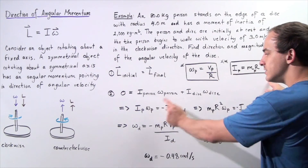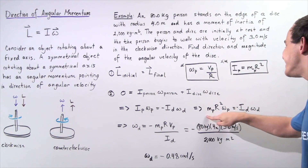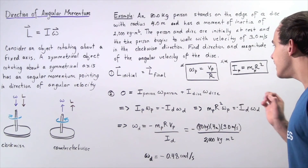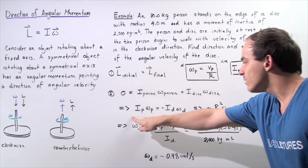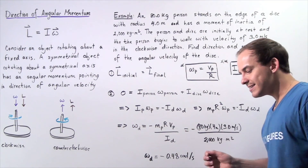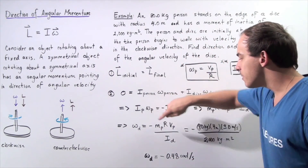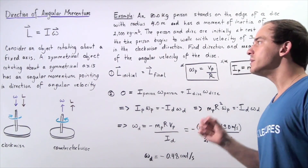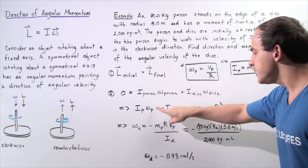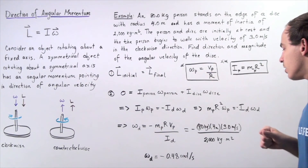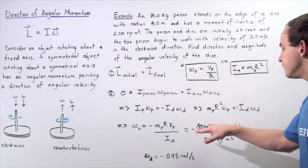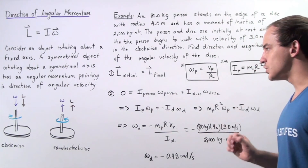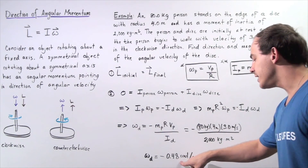Now we plug in the expression for Ip and solve for omega_d, the angular velocity of the disk, also substituting in the expression for omega_p. We get: omega_d = −(mass of person × radius × linear velocity of person) / moment of inertia of disk. Plugging in the values: −(80 kg × 4 m × 3 m/s) / 2000, we get negative 0.48 radians per second. So the magnitude of angular velocity is 0.48 radians per second.